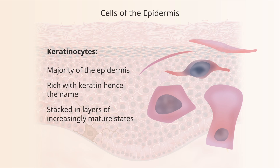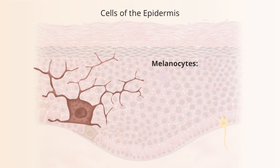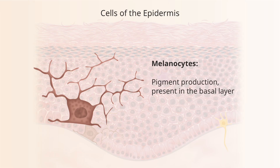Another important cell in the epidermis is the melanocyte. Melanocytes have dendrites associated with them. They have a different origin from the ectodermal-derived keratinocytes — they are neural crest-derived cells. They are responsible for making pigment, which is one of the major ways we're protected against UV radiation. They are present primarily in the basal layer, but they have interdigitations that allow them to extend up into the major keratin layer.